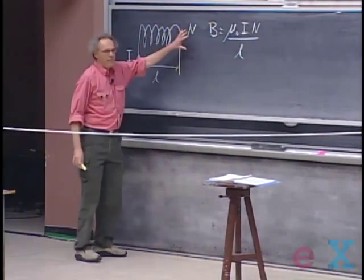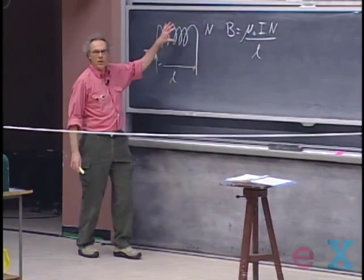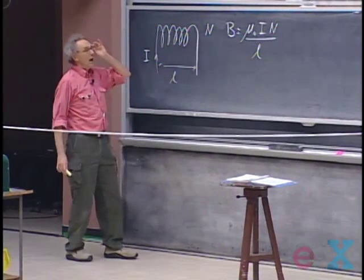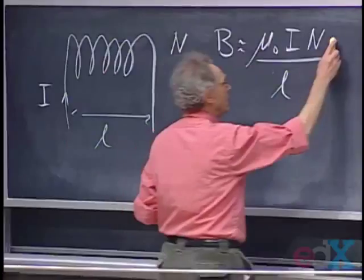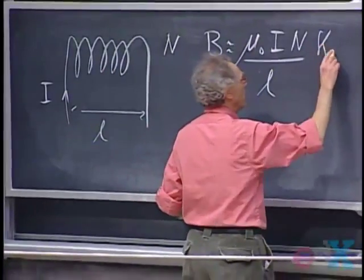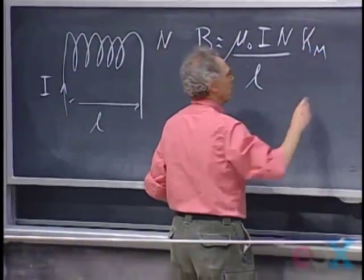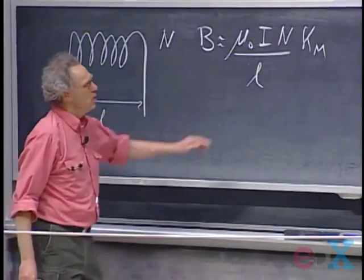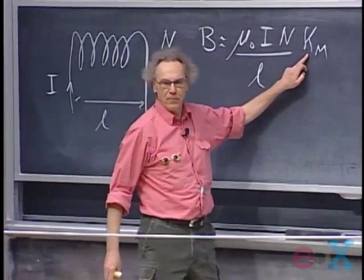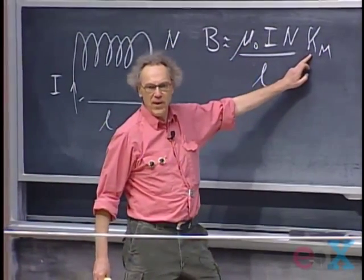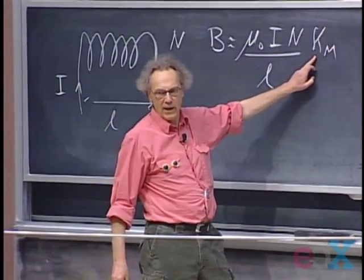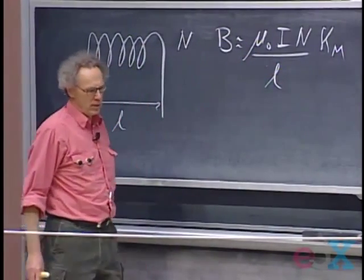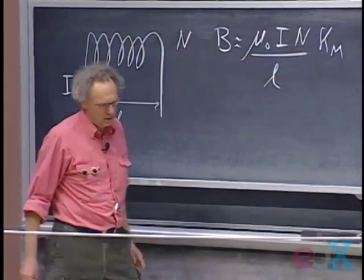If I put ferromagnetic material inside, I have to include this factor kappa_M — the magnetic permeability. And this can be huge: ten, a hundred, even up to a thousand and higher. So you get an enormous increase in magnetic field strength.